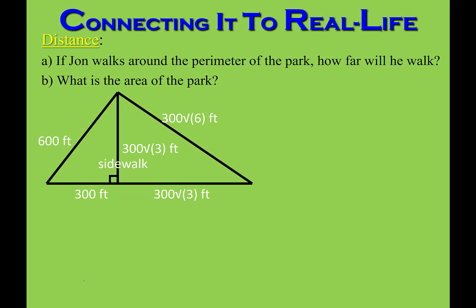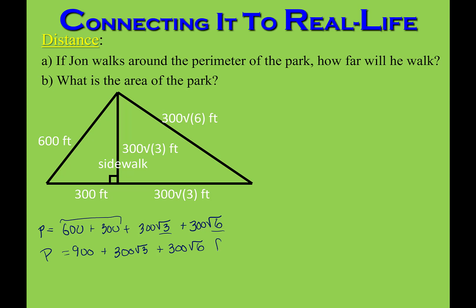Here is our application problem: if John walks around the perimeter of the park, how far does he walk, and what is the area? The perimeter is the three sides added up: 600 plus 300 plus 300 square roots of 3 plus 300 square roots of 6. I can add 300 and 600 to get 900, but the square root of 3 and square root of 6 cannot be combined since they're not like radicals. So the final answer for the perimeter is 900 plus 300 square roots of 3 plus 300 square roots of 6 feet.